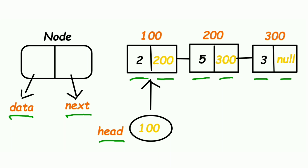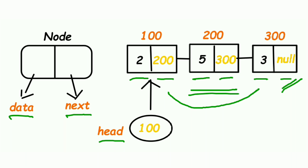To insert at the last, we go to that last element — since it points to null, it will now point to the newly added element. For deletion, if we want to delete the node with value 5, we just have to point the node with value 2 to address 300, and this is how we delete 5 from the linked list.